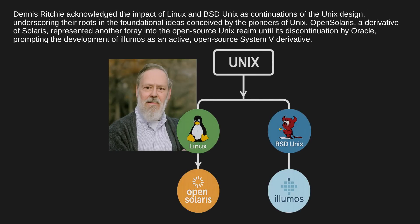Dennis Ritchie acknowledged the impact of Linux and BSD Unix as continuations of the Unix design, underscoring their roots in the foundational ideas conceived by the pioneers of Unix. OpenSolaris, a derivative of Solaris, represented another foray into the open-source Unix realm until its discontinuation by Oracle, prompting the development of illumos as an active open-source System V derivative.